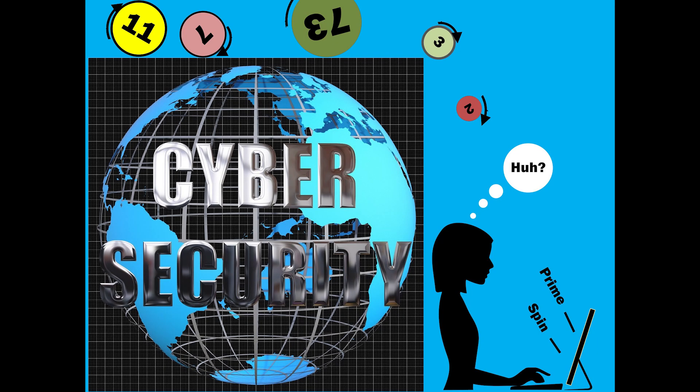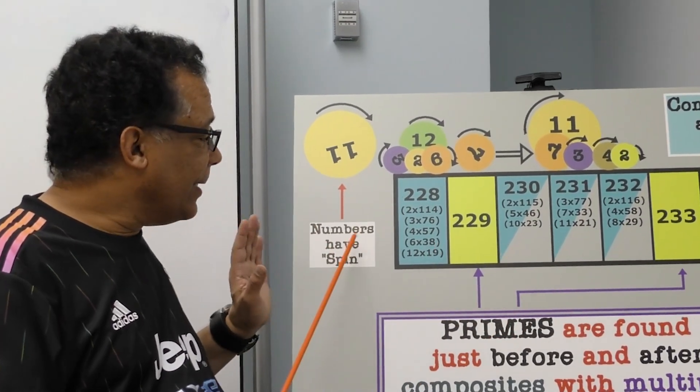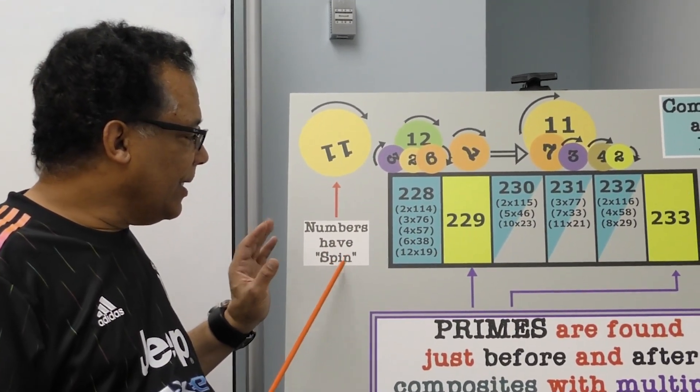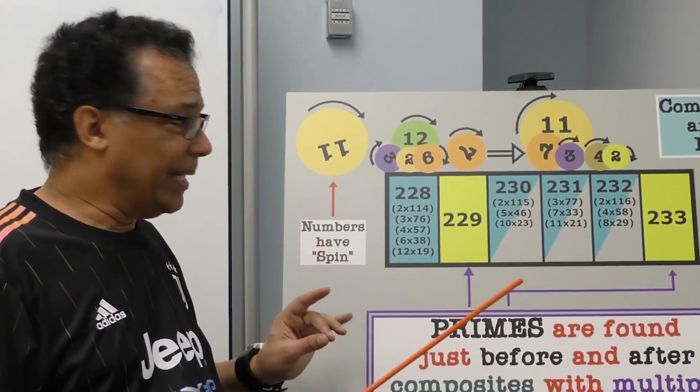What's prime spin? The important thing to notice is that numbers have spin. The greatest mathematicians for thousands of years did not notice this spin.